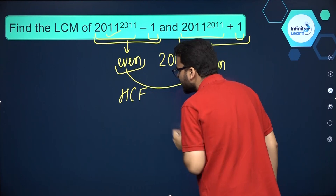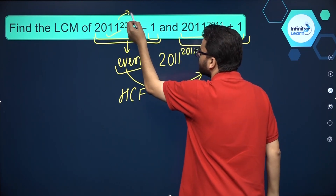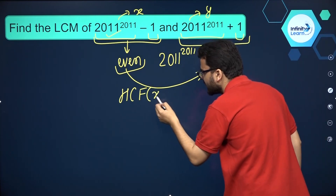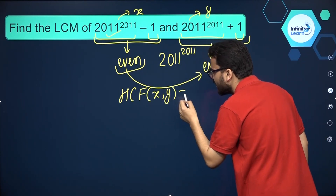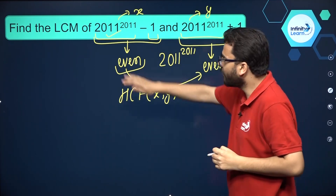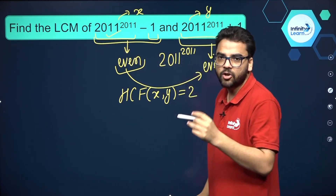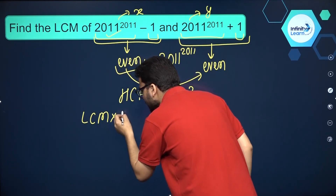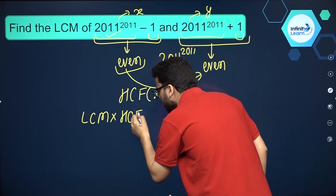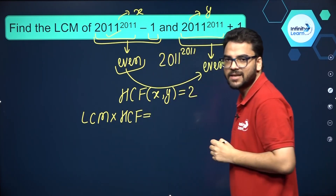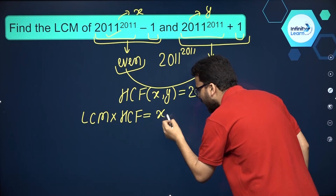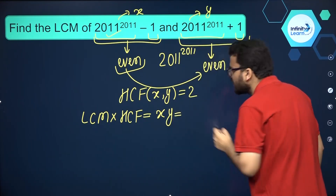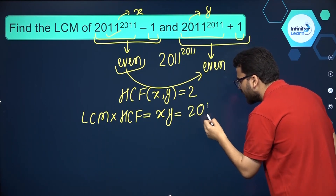So if they are consecutive even numbers, what is their HCF? Let's suppose I'm taking one to be x and the other to be y. The HCF of consecutive even numbers is equal to two only. And we have to find their LCM. You have studied this property: LCM times HCF of two numbers is equal to the product of the numbers itself, so that equals x times y.